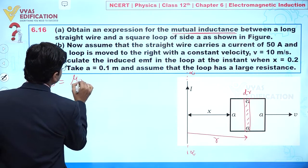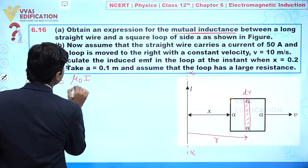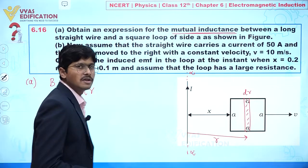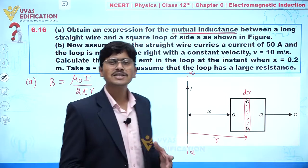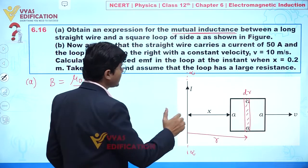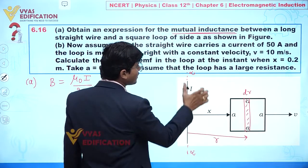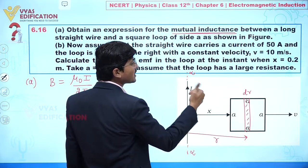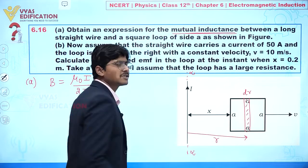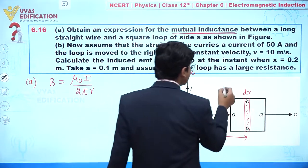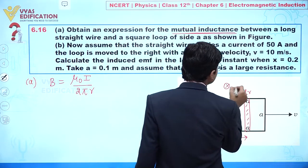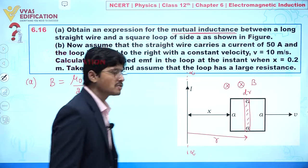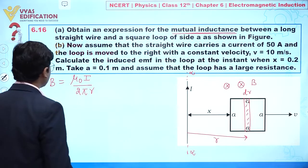The value of B can be written as B = μ₀I / (2πr). For direction: if the thumb indicates the direction of current, then the curled fingers indicate the direction of the magnetic field. So the magnetic field direction is perpendicular inward.